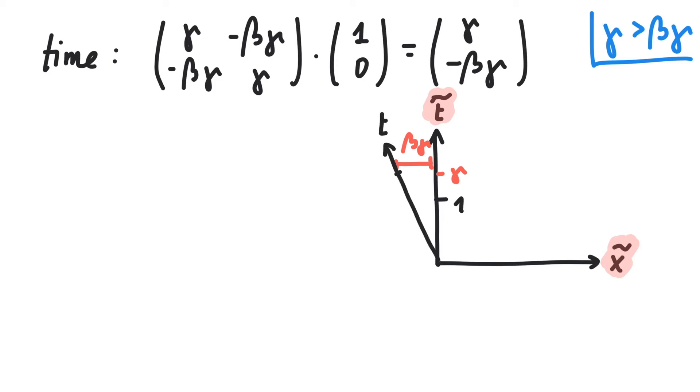The moving observer sees our time axis rotated. And what about space?